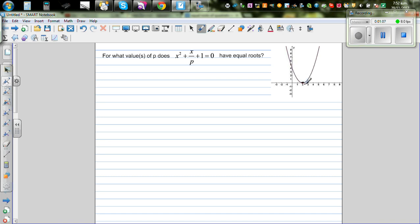So equal roots implies your determinant which is b squared minus 4ac is equal to 0.